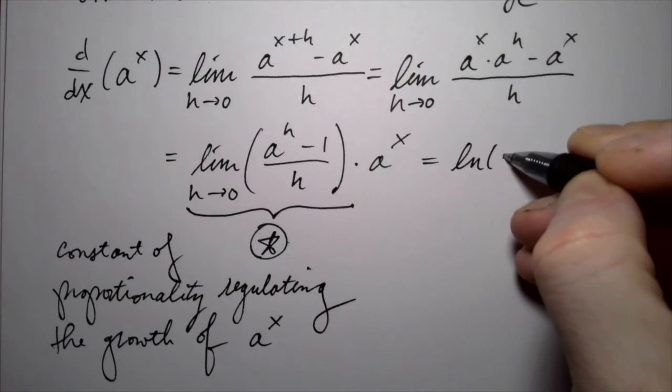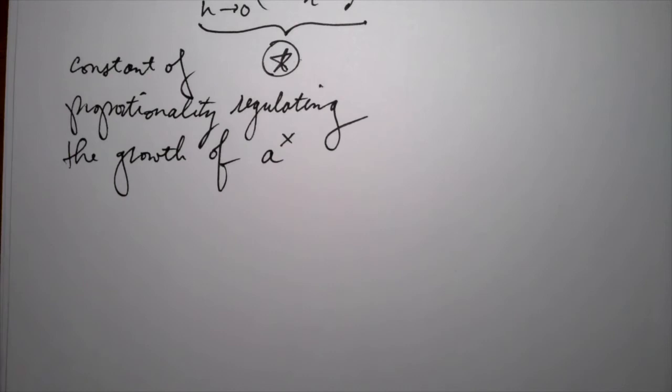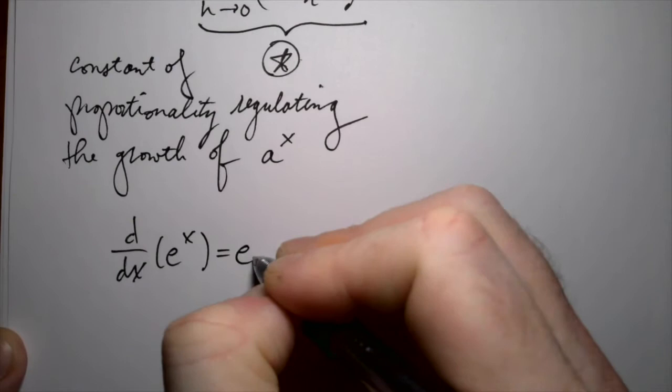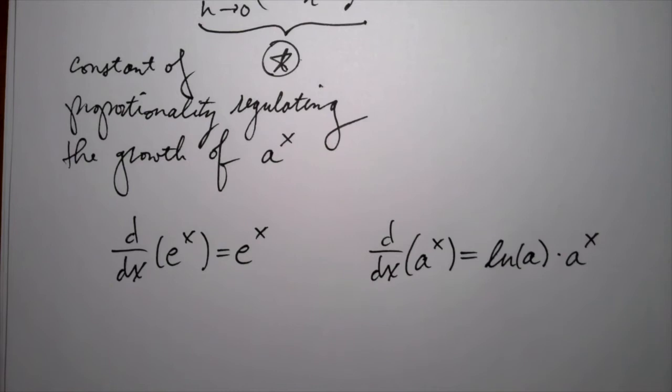So we get: the derivative of a to the x is the natural log of a times a to the x. In summary, the derivative of e to the x is itself, and more generally, the derivative of a to the x is the natural log of a times a to the x.